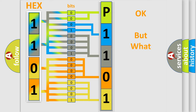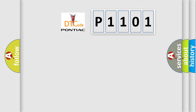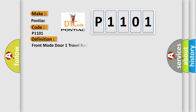The number itself does not make sense to us if we cannot assign information about what it actually expresses. So, what does the diagnostic trouble code P1101 interpret specifically for Pontiac car manufacturers? The basic definition is: Front mode door one travel range too small.